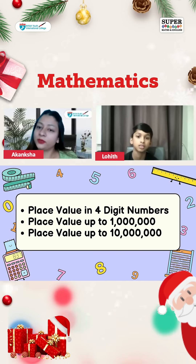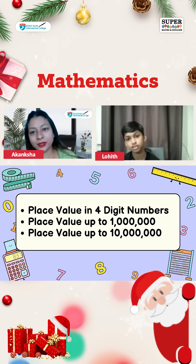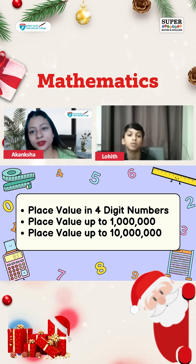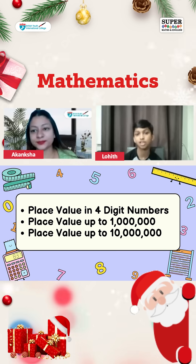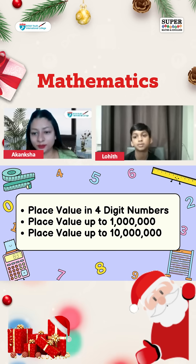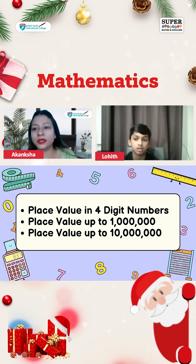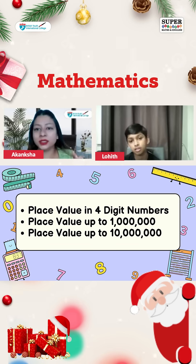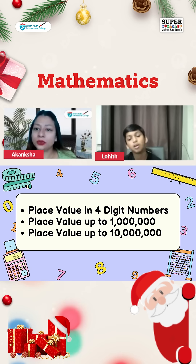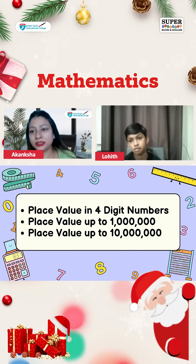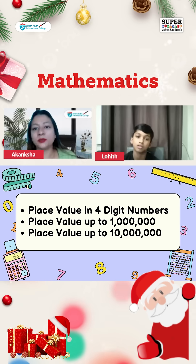Let's discuss place value. Lohith, can you please tell me what is place value? Place value is like what the number is — for example, thousands, hundreds, tens, and ones. Perfect. Place value is basically the value of the digit in a particular series of numbers. It could be a three-digit, four-digit, or two-digit number, so you just need to know the value of each digit in that group of numbers.